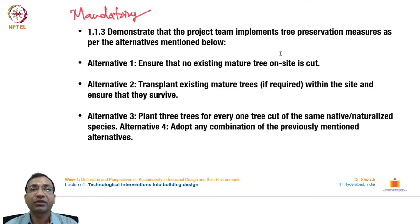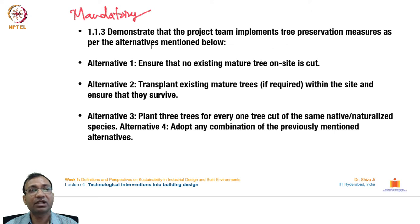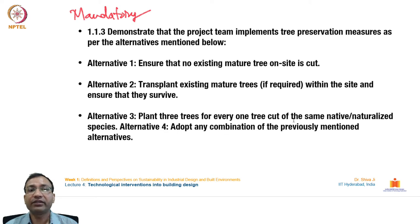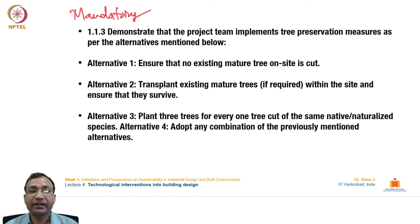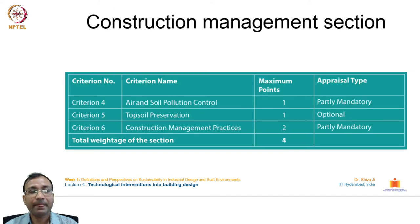Another mandatory criterion requires the project team to implement tree preservation measures. Alternative 1: ensure no existing mature tree on site is cut. Alternative 2: transplant existing mature trees within the site and ensure survival. Alternative 3: plant three trees for every one tree cut of the same native species. Alternative 4: adopt any combination of the above alternatives.